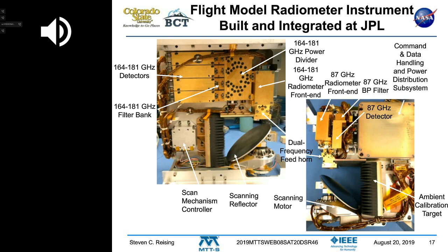QBERT can measure just one channel at once, detects radio frequency interference, and does sophisticated processing. It's involved with improving correction of weather satellites — mitigation of RFI effects — similar to what NASA's Soil Moisture Active Passive (SMAP) mission does at about 24 megahertz bandwidth.